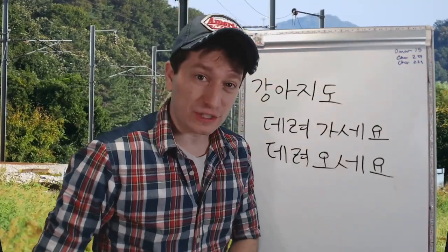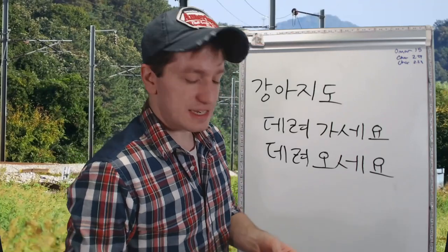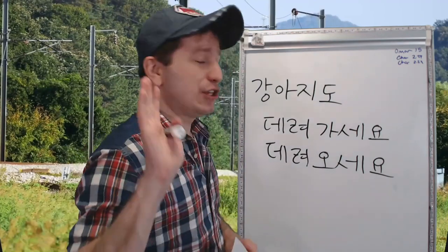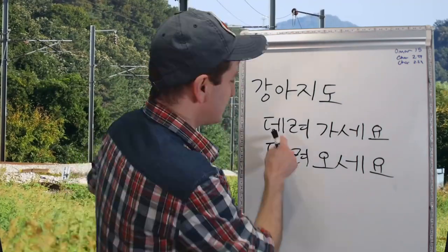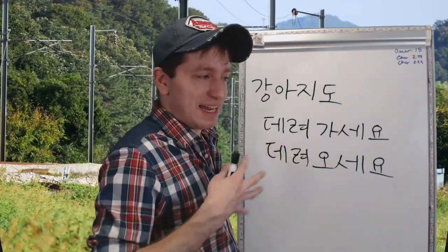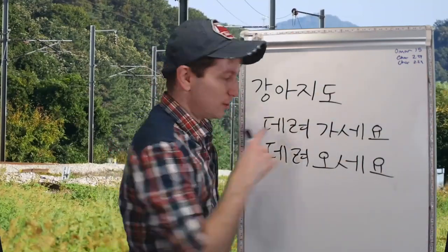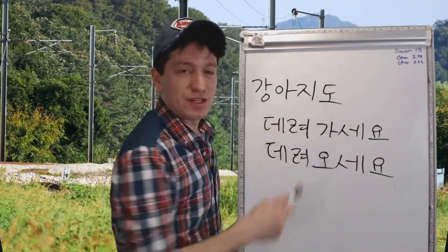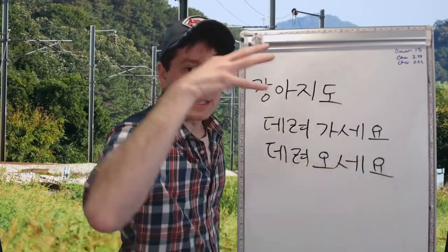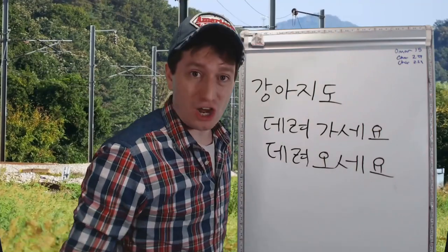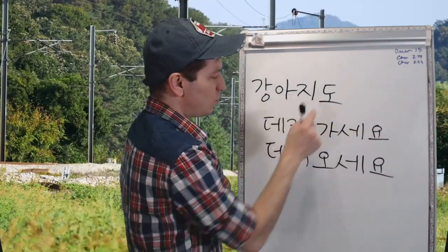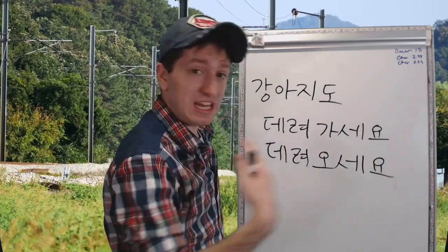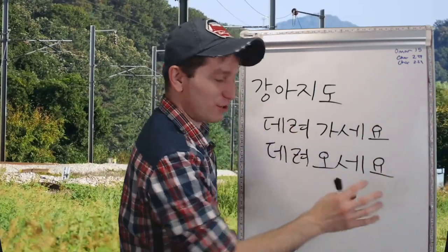데려가다 and 데려오다 are also products of this same form. 데려다 means to carry or to bring, but only for humans or animals — to bring something there, to take it and then go, or to take it and then come. 강아지 데려가세요 means 'take your dog and go,' as in bring your dog there. 강아지도 데려오세요 means 'take your dog and come here' — bring your dog here.